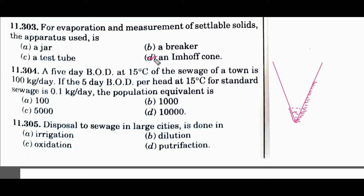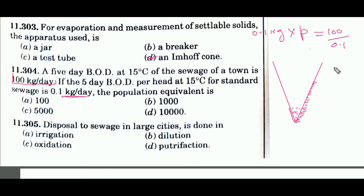Question 304: The 5-day BOD of a town is 100 kg per day. Per person, BOD is 0.1 kg per day. Population equivalent P equals total BOD divided by per-person BOD: 100 divided by 0.1 equals 1000. The population equivalent is 1000, which is option B.